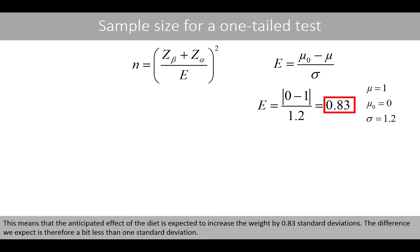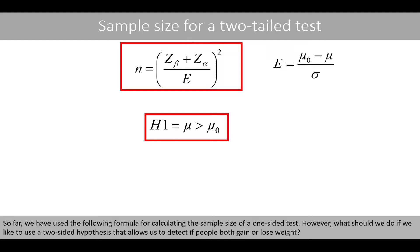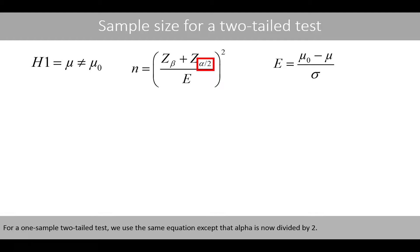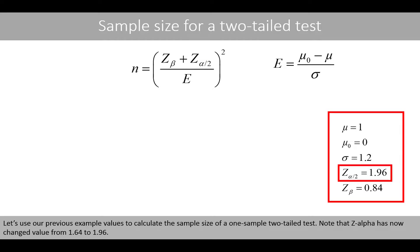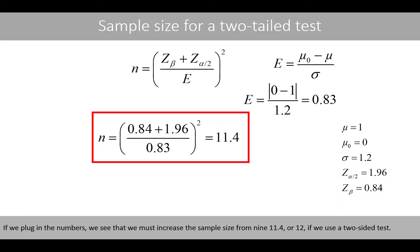So far, we have used the following formula for calculating the sample size of a one-sided test. However, what should we do if we like to use a two-sided hypothesis that allows detecting if people both gain or lose weight? For a one-sample two-tailed test, we use the same equation except that alpha is now divided by 2. Note that z-alpha has now changed value from 1.64 to 1.96. If we plug in the numbers, we see that we must increase the sample size from 9 to 11.4, or rounded to 12, if we use a two-sided test.